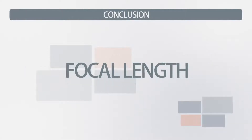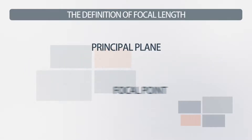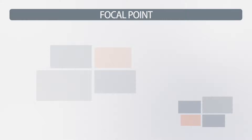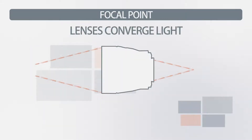Alright, so I hope you learned something — that's it for this video. In the next one, we're going to be... actually, we have a lot more to talk about. Let's get back on track. So, what is the principal plane and focal point? Let's start with the focal point because it's a little bit easier to understand. As I mentioned earlier, lenses converge light. Light that enters the lens is converged to a point.